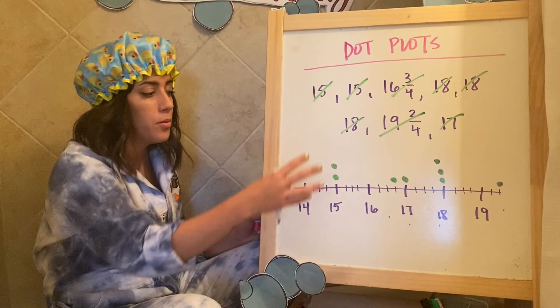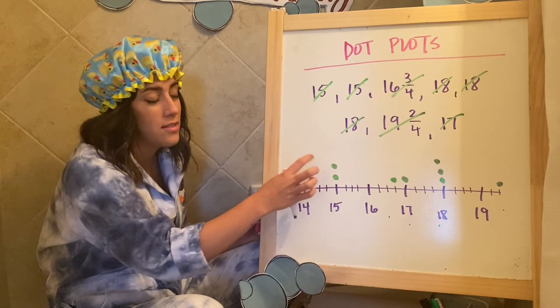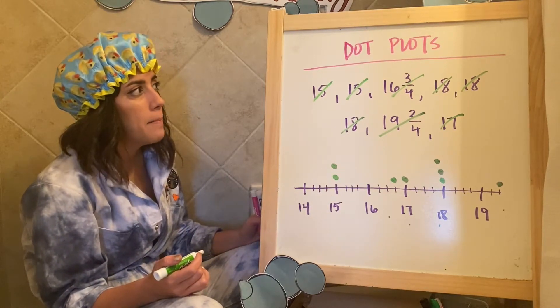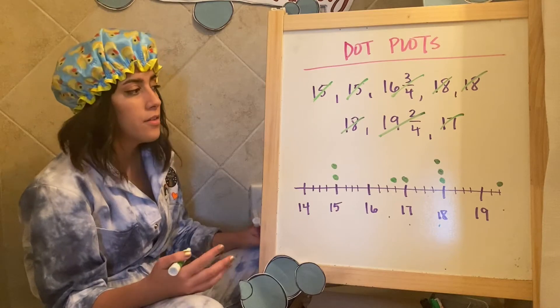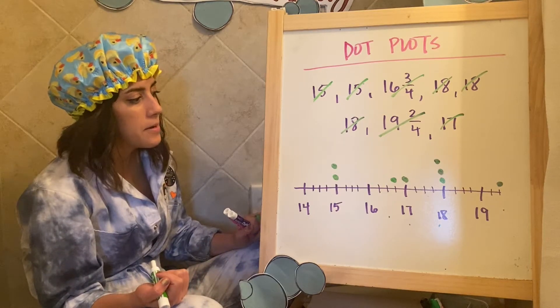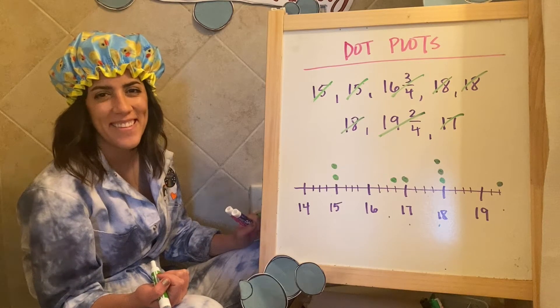And so this is basically a dot plot. So taking some data points and then putting them on here just to see the amount, the frequency, or the number of those, that data. Let me show you one more example.